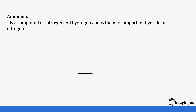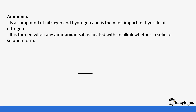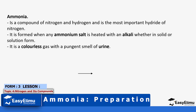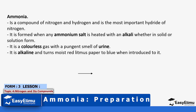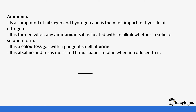Ammonia is composed of nitrogen and hydrogen and it is the most important hydride of nitrogen. It is formed when any ammonium salt is heated with an alkali, whether in solid or in solution. It is a colorless gas with a pungent smell of urine, and it is alkaline — it turns moist red litmus paper to blue.